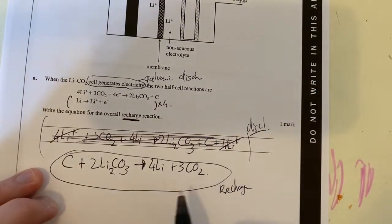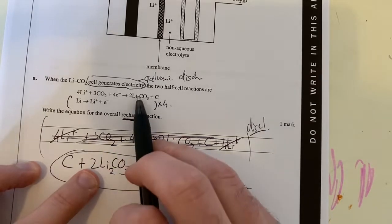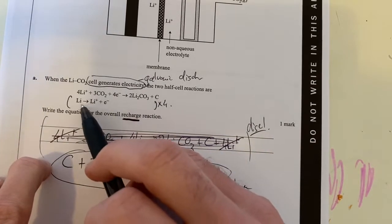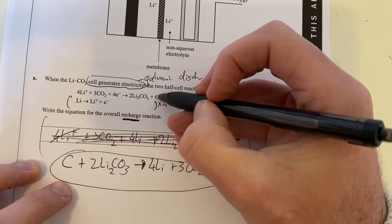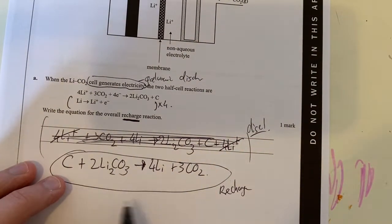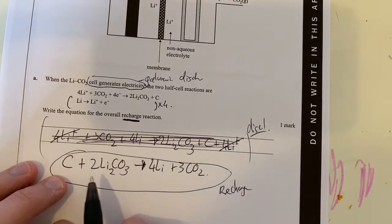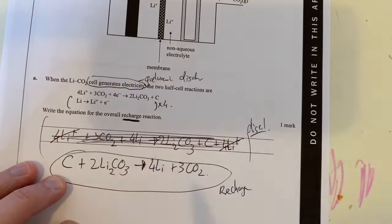I'm going to leave that for the examiners to actually mark. Now, just double-checking, we've got one of those, two of those, four of those, that's fine, and three of those. That's all good. There's no states in my equation here, so I don't need to copy states down here. We're assuming that states are not required in this equation because we don't know what they actually are. But there's an overall recharge reaction, which is the opposite of my discharge, which is important to know. Moving on.